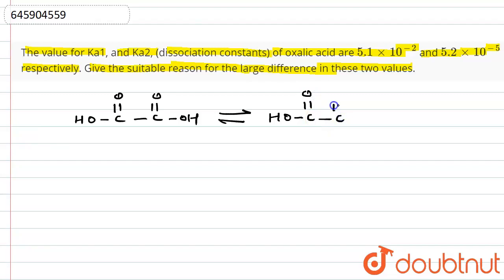Ka1 means acid dissociation constant. So it will break in that way, and it will be called as acid dissociation constant. Let's suppose we are taking C concentration of this acid.